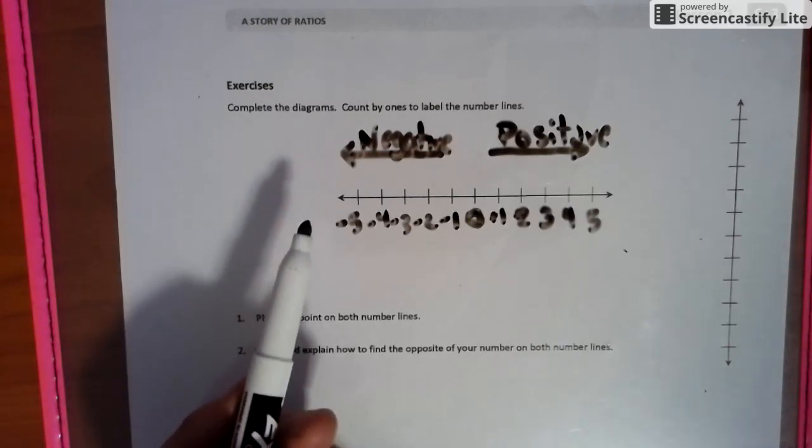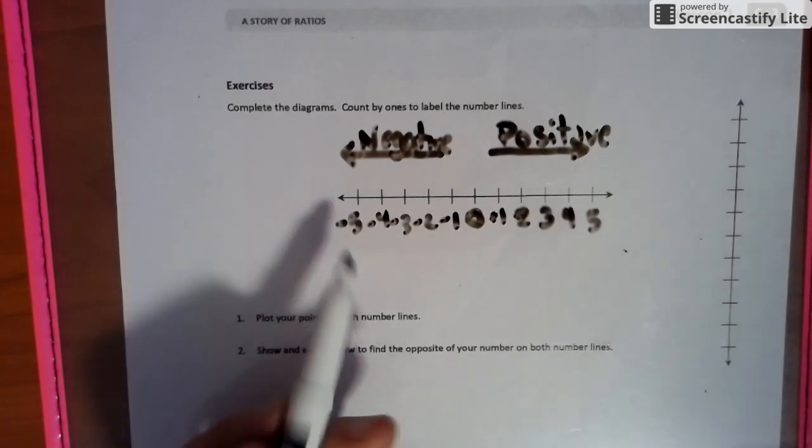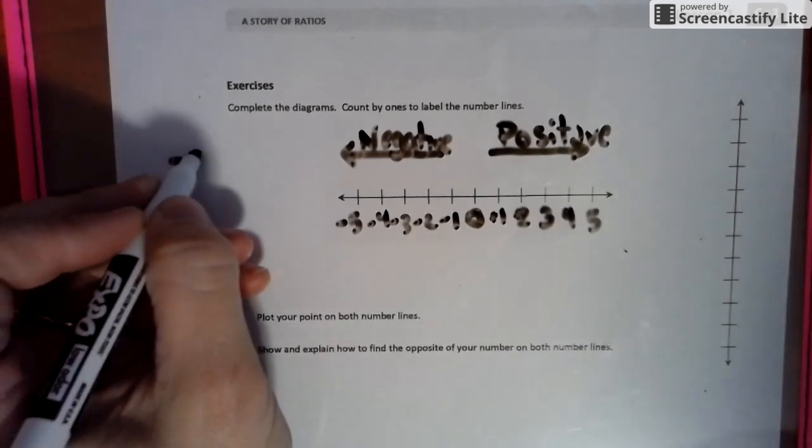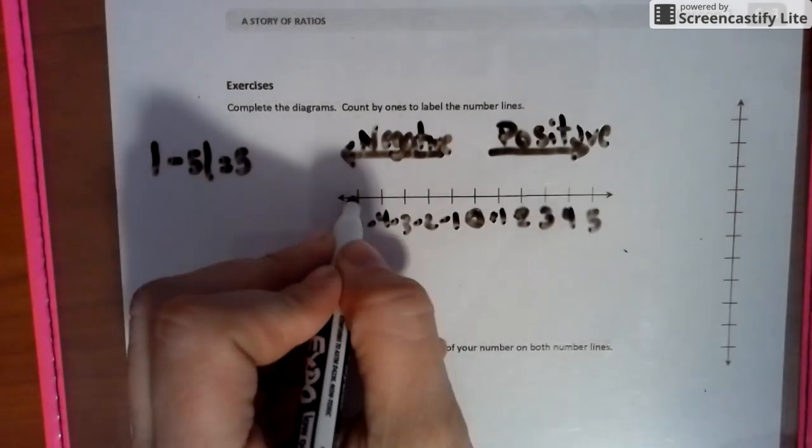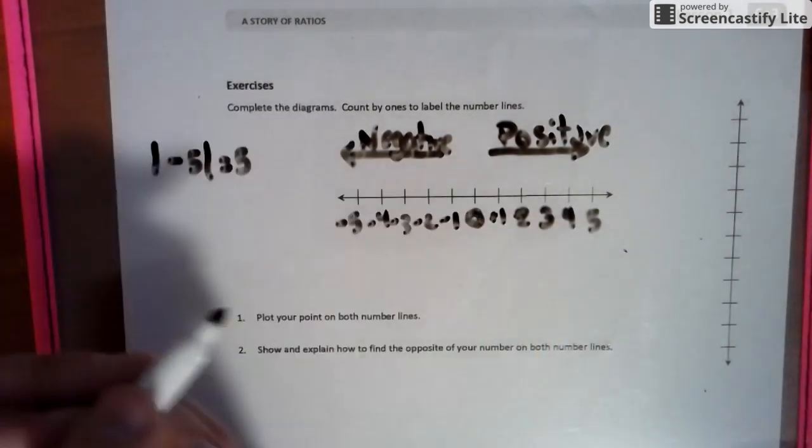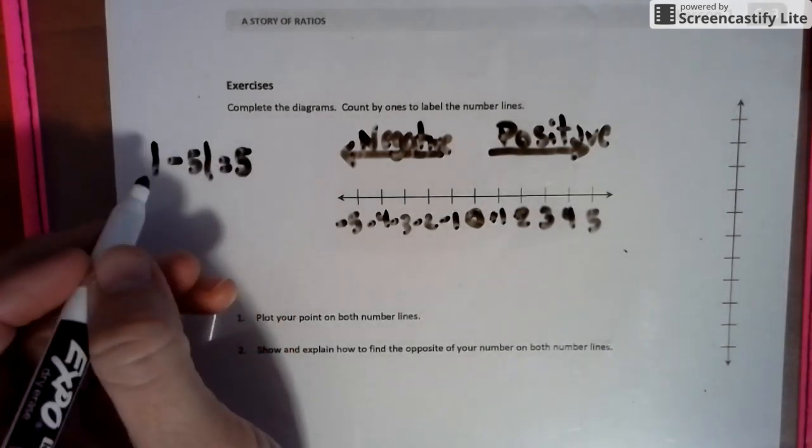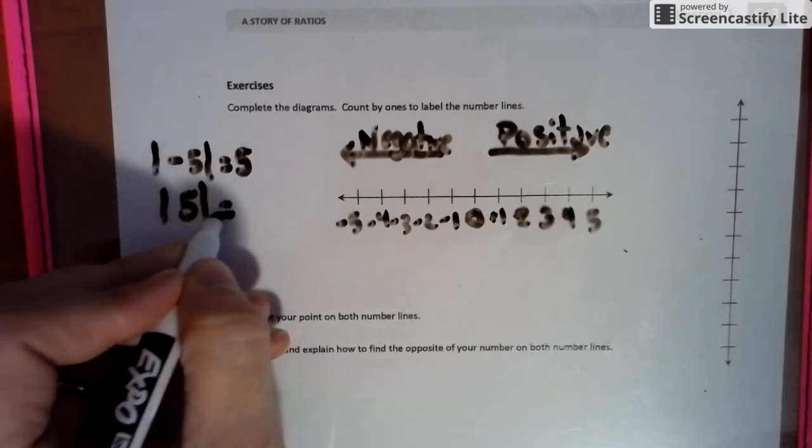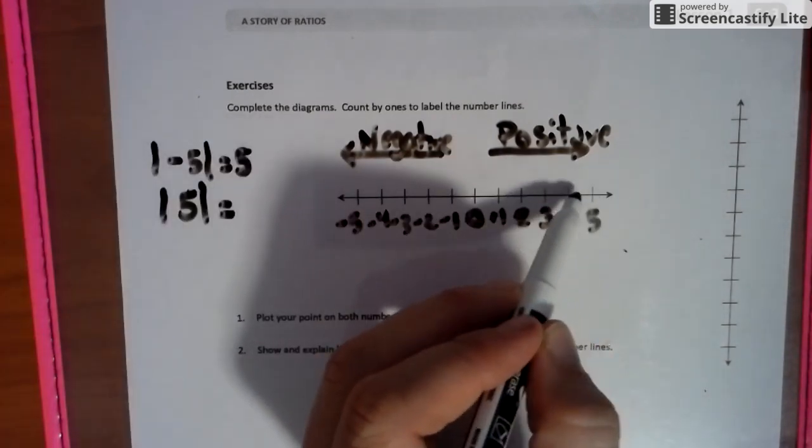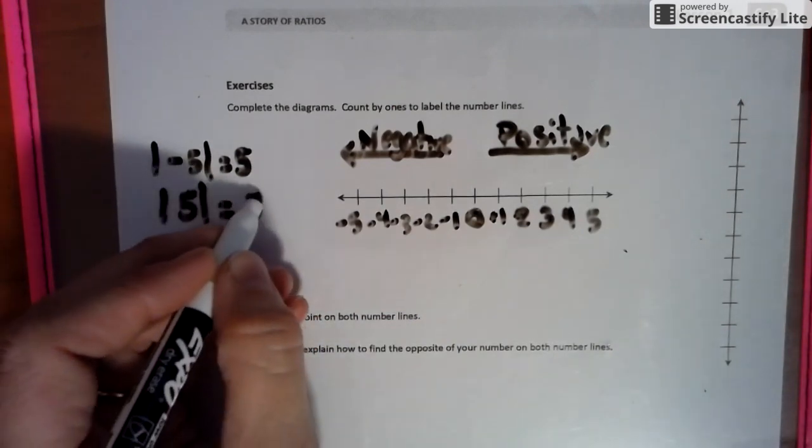So we're going to talk a little bit about absolute value. Absolute value is how far away from zero a number is. So for instance, this negative five, the absolute value of negative five would be five, because it is five jumps away from zero. But if we also look at it, the absolute value of positive five is also five, because it is also five steps away from zero.